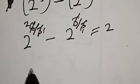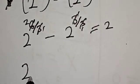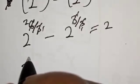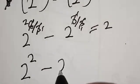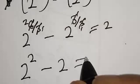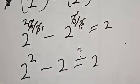Then we have 2 raised to power 2 minus 2 raised to power 1 must equal 2. That is 4 minus 2 equals 2, which confirms the left-hand side equals the right-hand side. We satisfy the given equation at s equal to 2 raised to power 1 over 3.